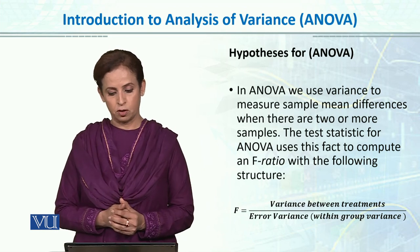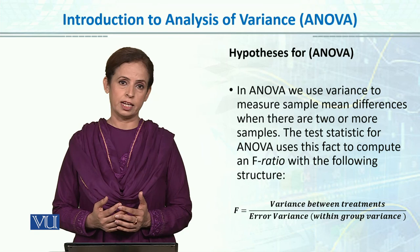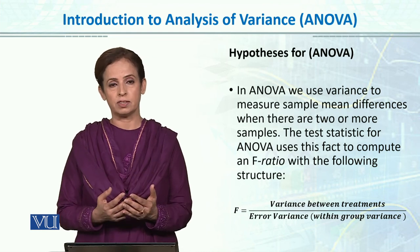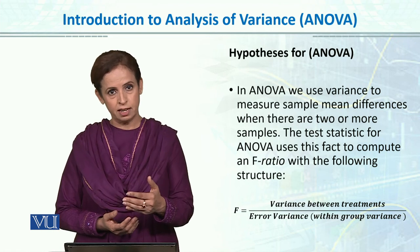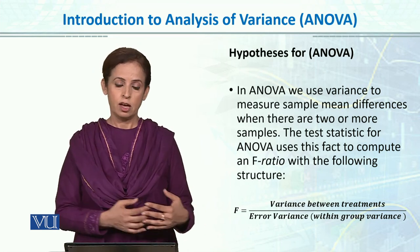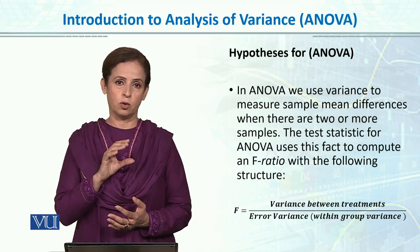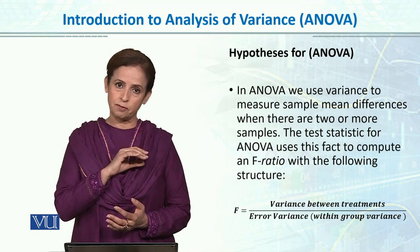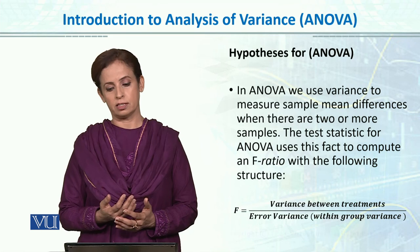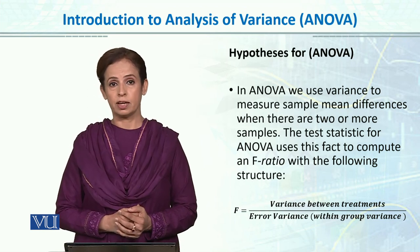The test statistic for ANOVA uses variance to compute the F-ratio. We calculate two types of variance: first, treatment variance — the variability due to the manipulated factor, such as the effect of phone use on driving performance; and second, error variance, also called within-group variance. The F-ratio is calculated by dividing between-group variance by within-group or error variance.